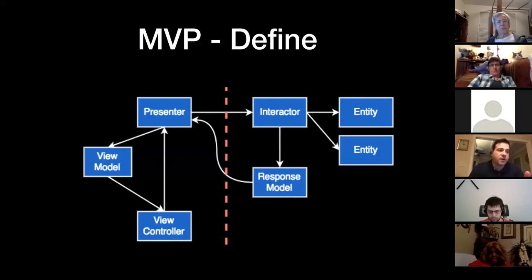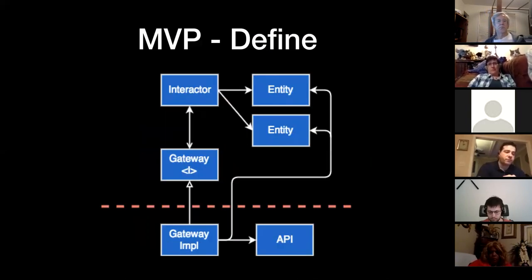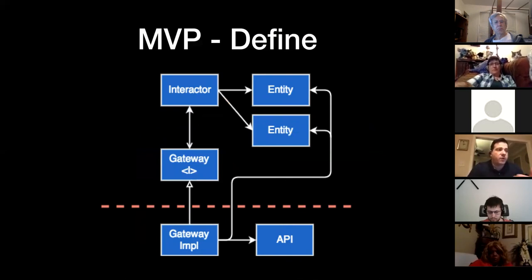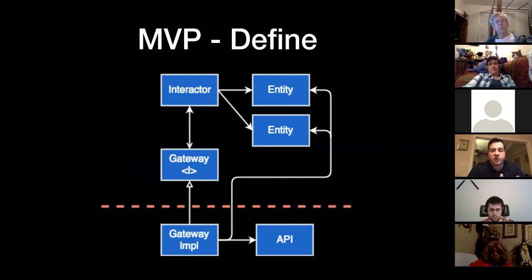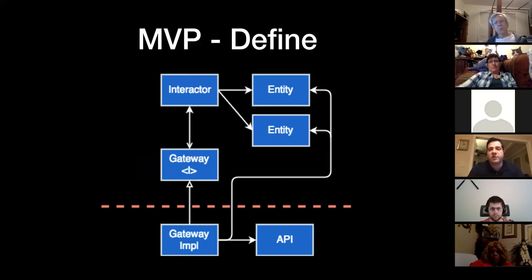In interface terms, the view model is an interface which the view controller implements. The response model is the interface that the presenter implements. This allows the flow back to happen, and you're only pushing data forward for your dependency injection. Everything on the left is platform specific; everything on the right of the dash line is your business logic. The beauty of clean code is that gateways and interfaces talk to a specific gateway API, and if you want to change the gateway implementation, you can do that without ever affecting your business logic.